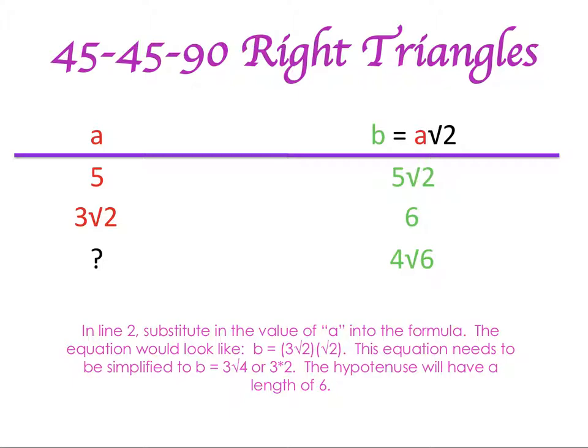For the next equation, I have 3 times the square root of 2 as my leg, and I need to multiply that by the square root of 2 in order to find my hypotenuse. When I multiply them together, I end up with 3 times the square root of 4, because the square root of 2 times the square root of 2 — I multiply those 2's together — gives me the square root of 4. But the square root of 4 is a perfect square, so I can take the square root of 4 to get 2. Don't forget I have that 3 there, so 3 times 2 gives me 6. So when my leg has a length of 3 times the square root of 2, I know that my hypotenuse will be 6.